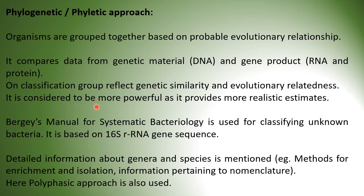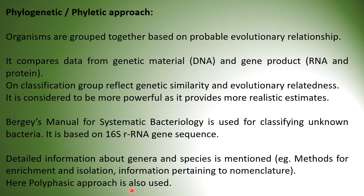Bergey's manual of systematic bacteriology is used for classifying unknown bacteria based on 16S rRNA gene sequence — so a gene product is being studied. Detailed information about genera and species is mentioned in the systematic bacteriology book, for example methods for enrichment, isolation, and information pertaining to nomenclature. Here, a polyphasic approach is also used — the polyphasic approach combines phenetics (morphology), genetics (study of genetic material), and the phylogenetic approach.